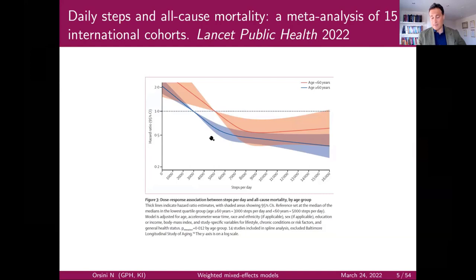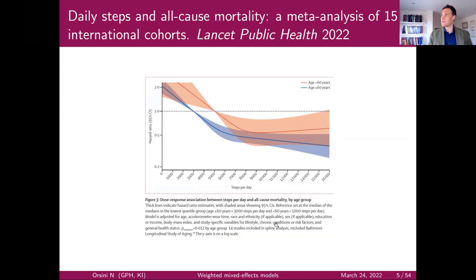Similar to the previous example: hazard ratios of mortality according to steps per day. Of course this is an observational study, so hazard ratios are adjusted for all potential confounding variables. Two curves are shown for two different age groups, using loess splines with a possible interaction between steps per day and age.